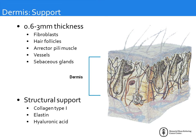Underneath the epidermis is the dermis — about half to three millimeters thick — containing fibroblasts, hair follicles, muscles that mobilize hairs, vessels, and sebaceous glands. This layer provides structural support and contains collagen, elastin, and hyaluronic acid. It is the layer broken down with age, and damaged collagen in the dermis is the reason we develop wrinkles — really nothing to do with dehydration of the epidermis.